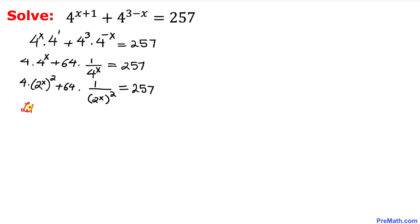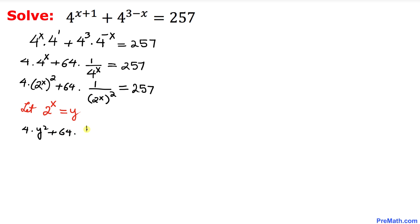Now let's make a substitution: let 2^x = y. Wherever we see 2^x we replace it by y. So our equation becomes simply 4y² + 64·(1/y²) = 257.